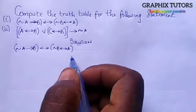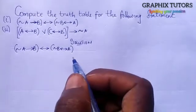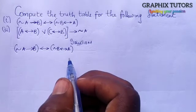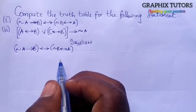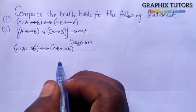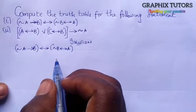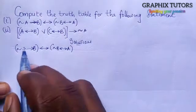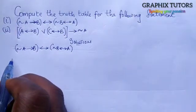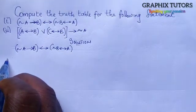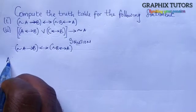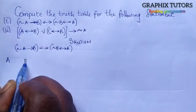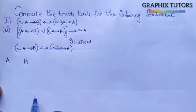The first thing you check is how many propositional variables we have. By propositional variables, I mean the variables used to represent your statements. We have just two of them, which are A and B.